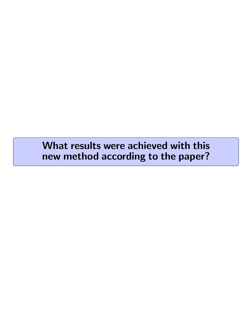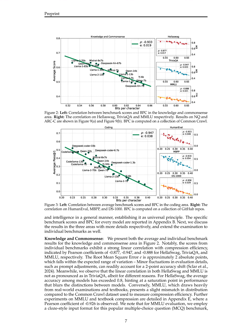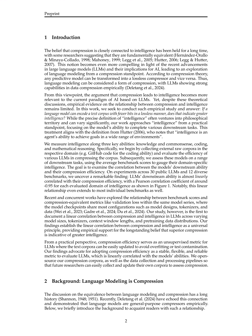What results were achieved with this new method according to the paper? The paper achieved remarkable results by establishing a linear correlation between compression efficiency and intelligence in LLMs. The study conducted experiments across 30 public LLMs and 12 diverse benchmarks, revealing a Pearson correlation coefficient of around minus 0.95 for each evaluated domain of intelligence. The findings showed that LLM downstream ability is almost linearly correlated with their compression efficiency, extending even to most individual benchmarks.